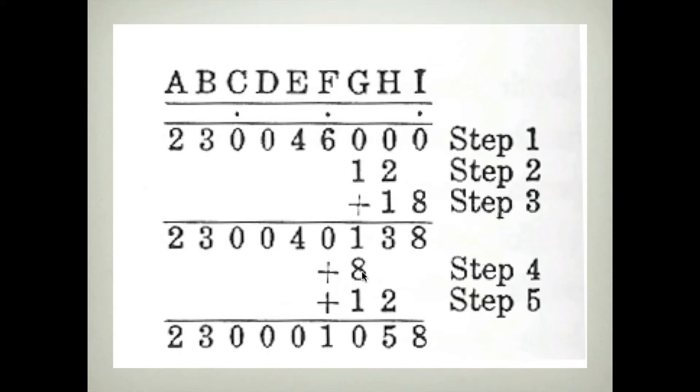And then here will be indicated in Kojima, the product 2 times 4 or 8 and 3 times 4 or 12. Again, the subproducts are descending to the right, and we add them to the partial product, 138, to get this result, 1058.